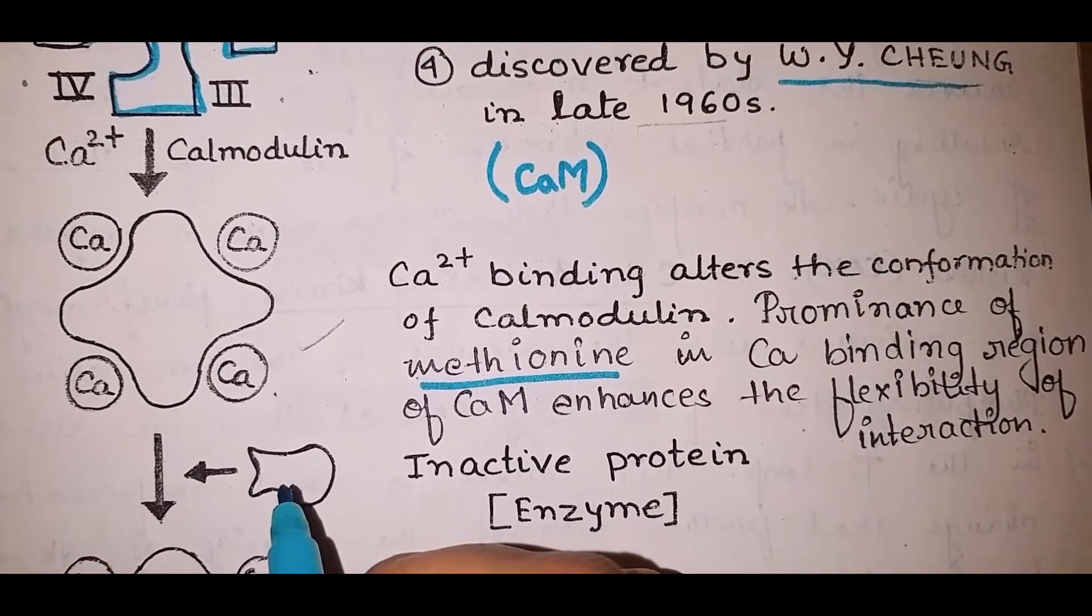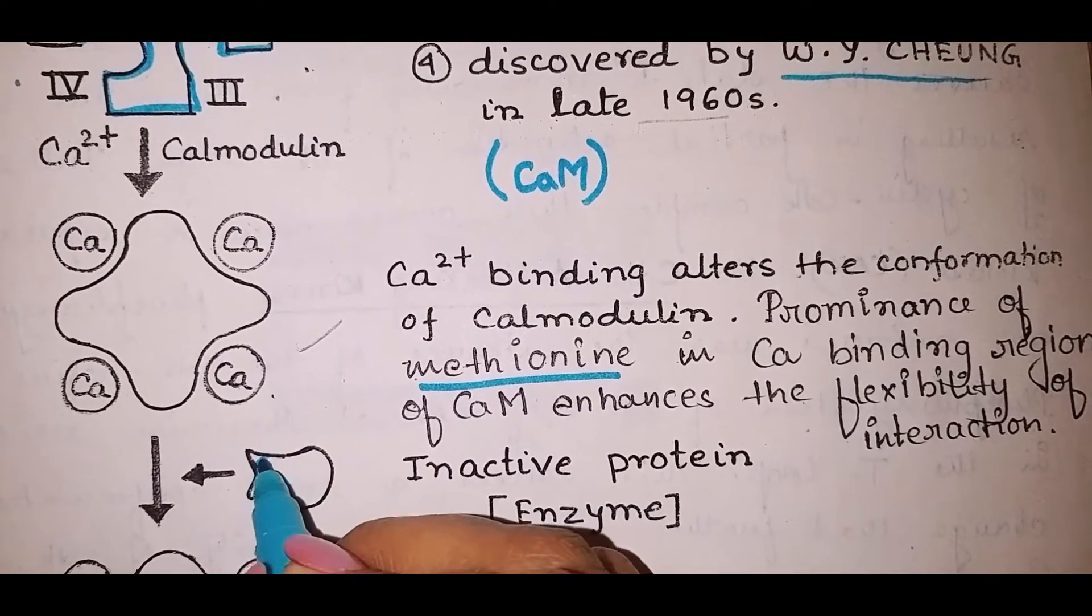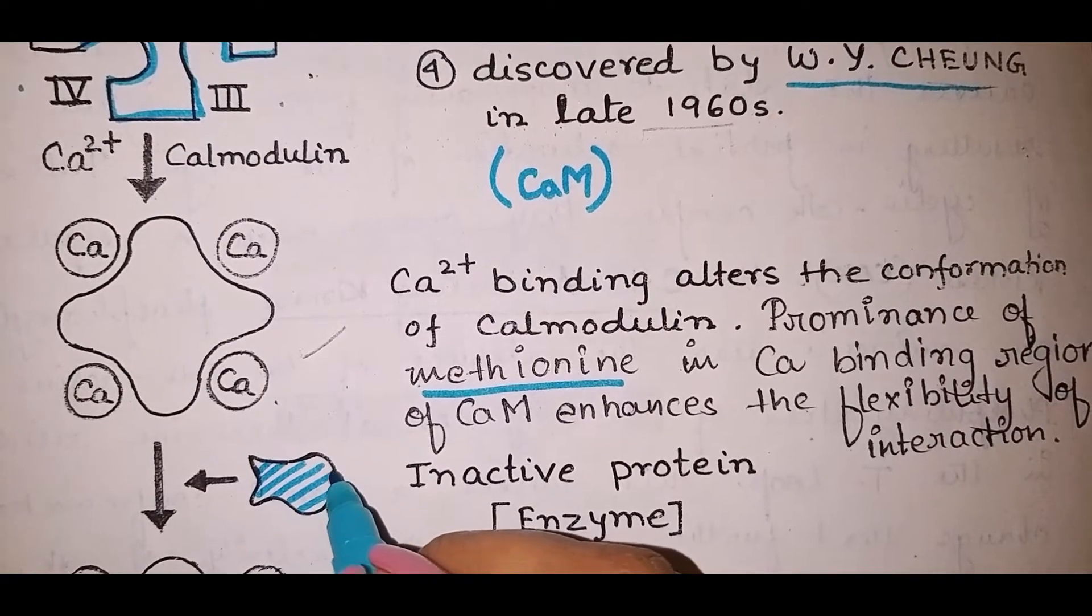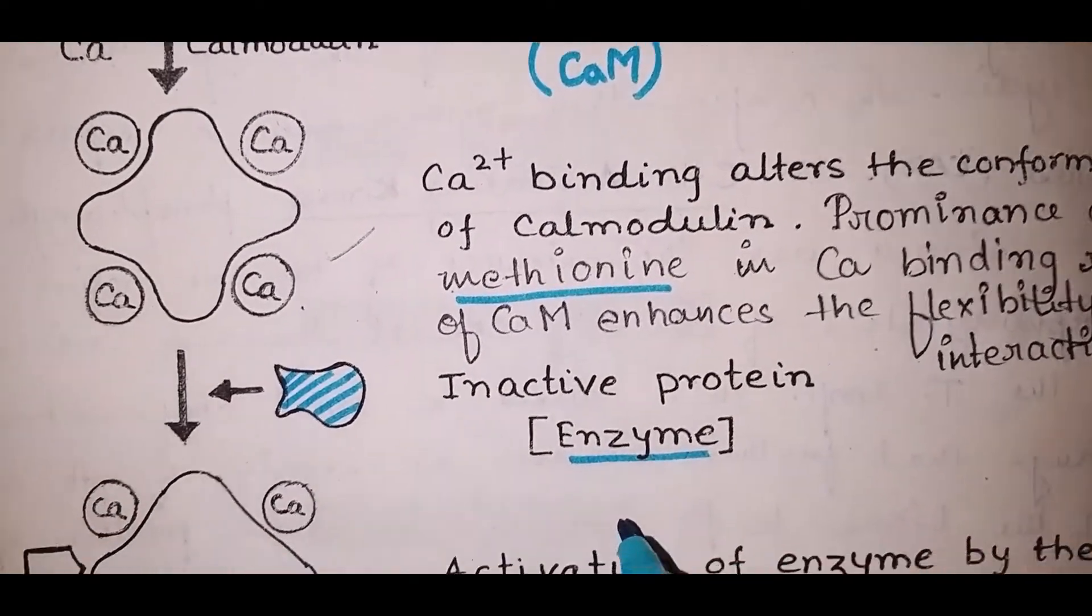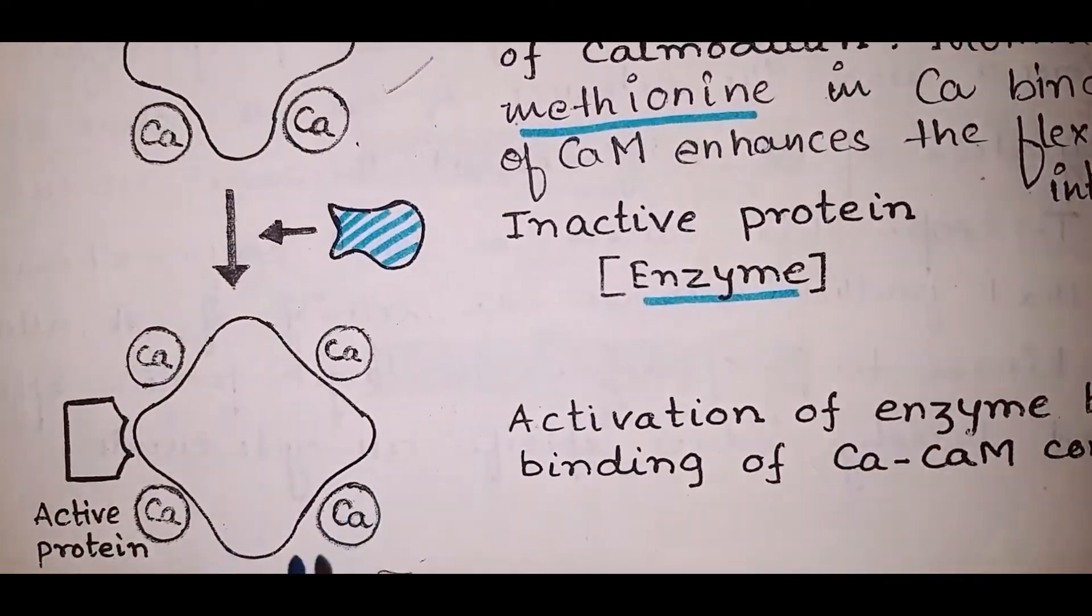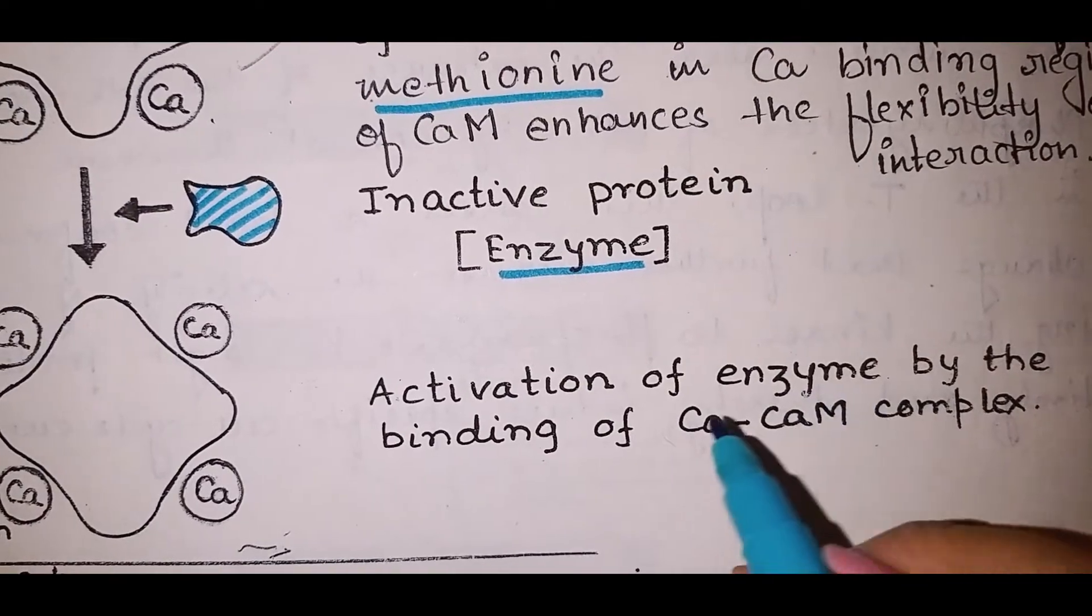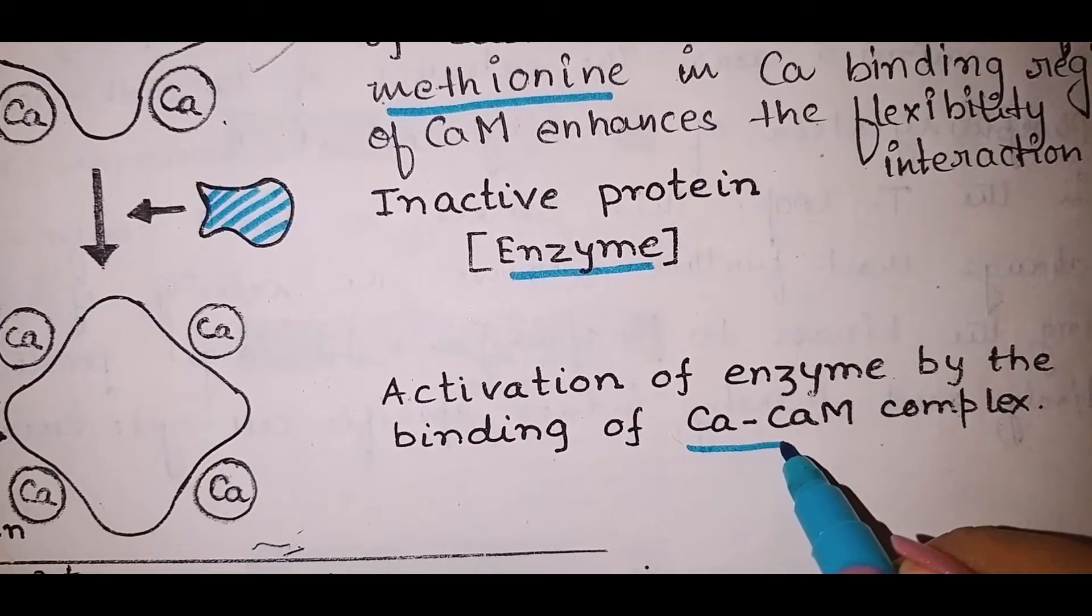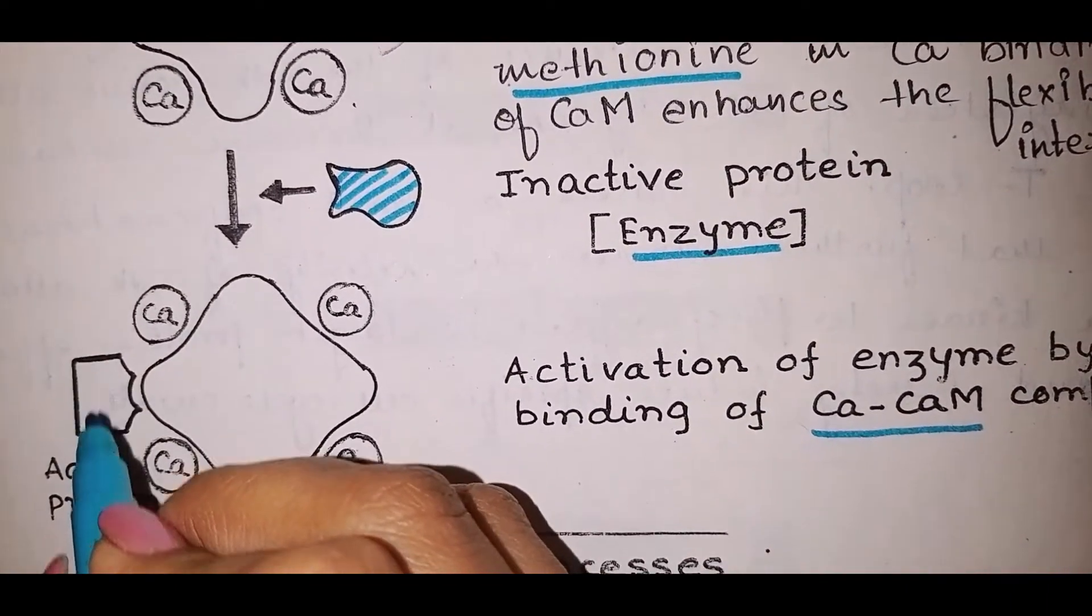This is the inactive protein or enzyme. I'm just shading it so that you understand better. This becomes active through activation of the enzyme by the binding of calcium-calmodulin complex. Now it becomes active.